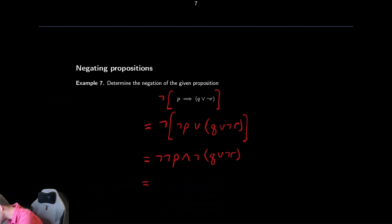And then we can use our double negation on that not not p. And we have p and not q or not r.